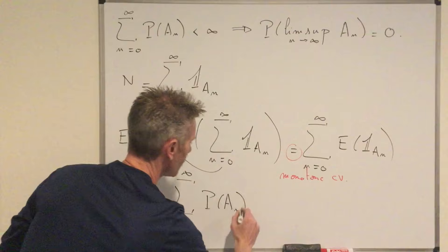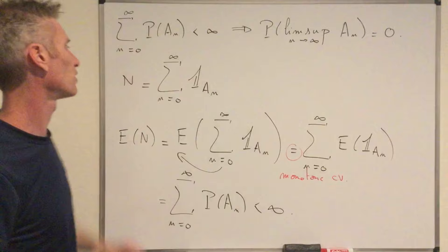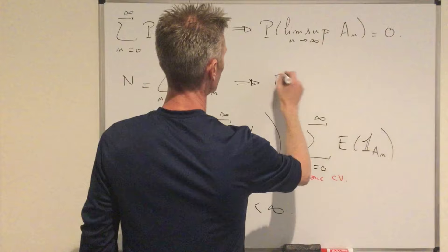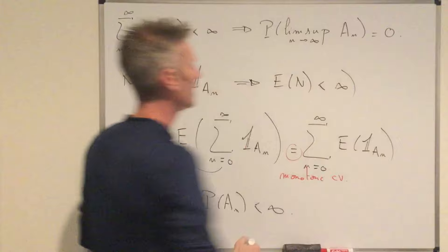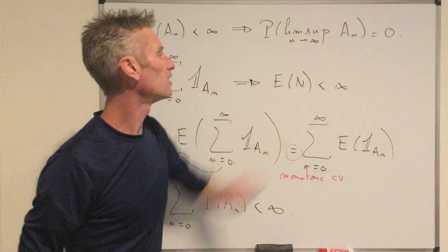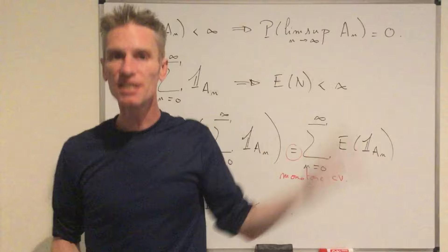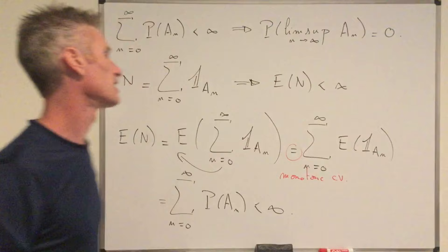Then E[1_{A_n}] by definition is P(A_n), so eventually E[N] equals the infinite sum of P(A_n). But we know that this is finite by assumption — that's the assumption of the first lemma. So what we deduce from this calculation using monotone convergence is that E[N] is finite. And E[N] finite implies that N itself should be finite with probability 1. If there were a positive probability that N was infinite, then the expected value would be infinite — but here the expected value is finite. So P(N = ∞) = 0.